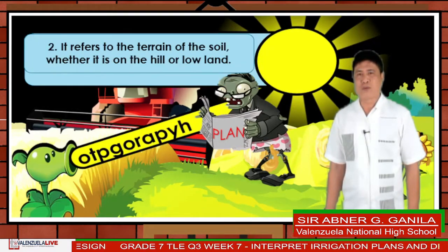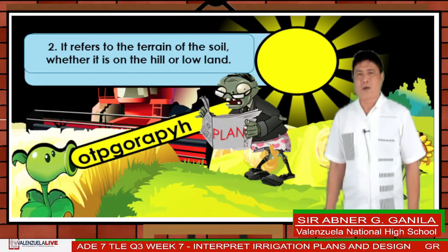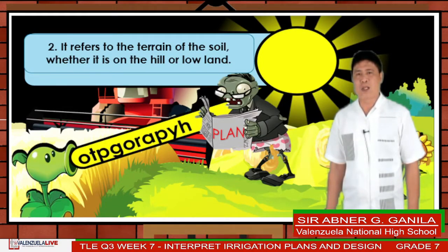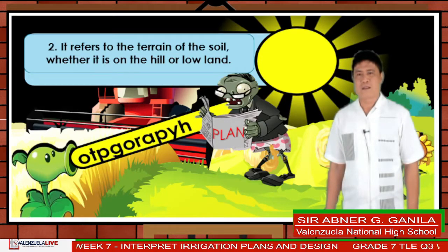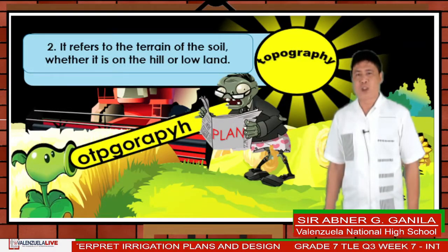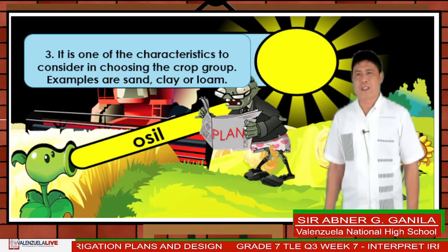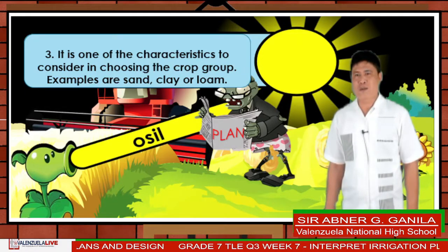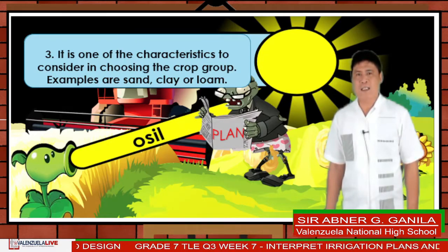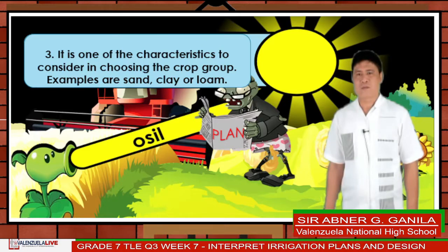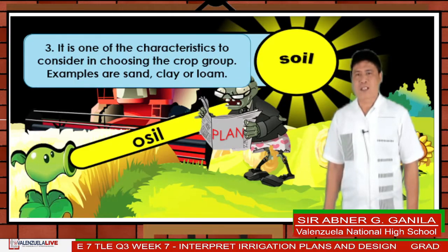Number two: it refers to the terrain of the soil, whether it is on the hill or low land. Very good — topography. Number three: it is one of the characteristics to consider in choosing the crop group. Examples are sand, clay, or loam. Correct — soil.